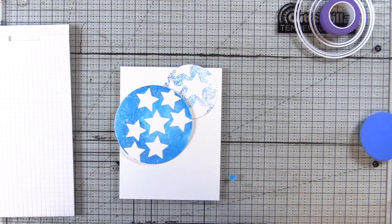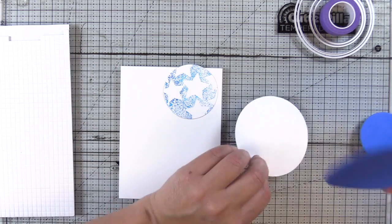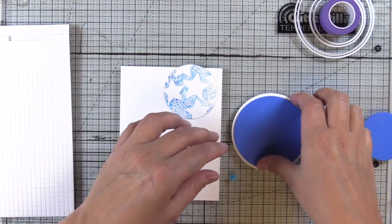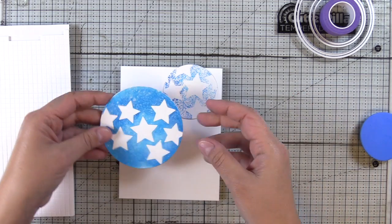I'll do the same thing. I have a piece of sticky back fun foam here that I have die cut with a smaller die. You could use foam tape as well or foam squares and I'm just going to put that on the back.